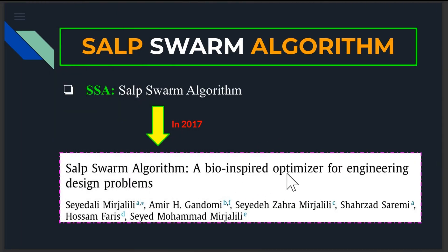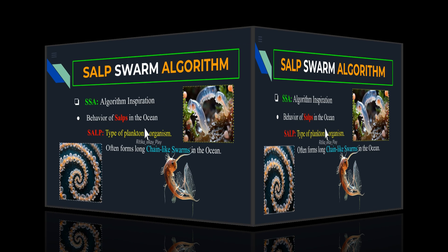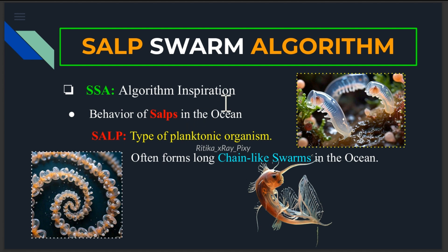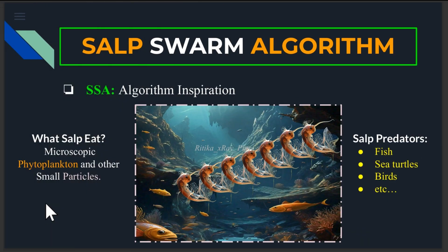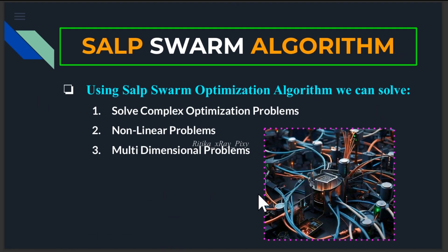This is a bio-inspired optimization algorithm introduced in 2017, based on the behavior of a living organism called a salp — small jellyfish-like marine animals that move in groups or swarms in the ocean. They form long chains and follow each other with a leader at the front exploring new paths, and others following in a coordinated way. This mimics how these cells move and work together to find food or navigate in the ocean.